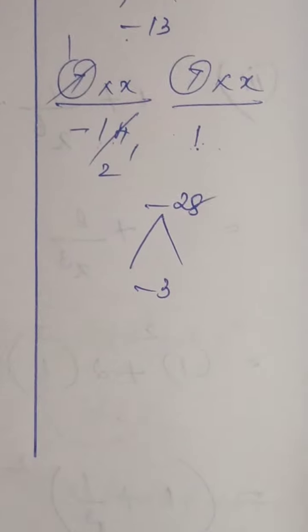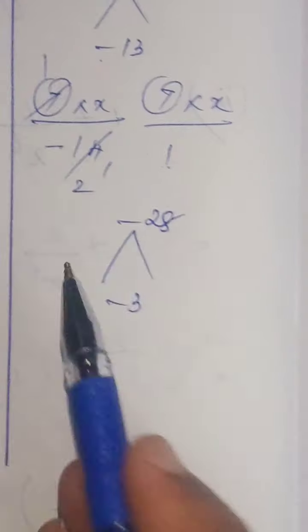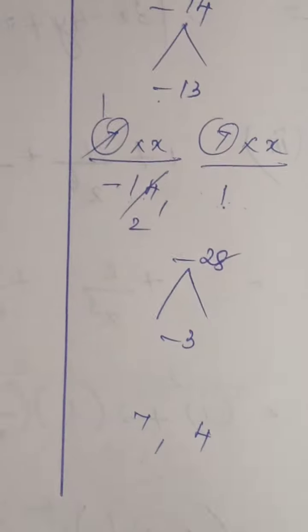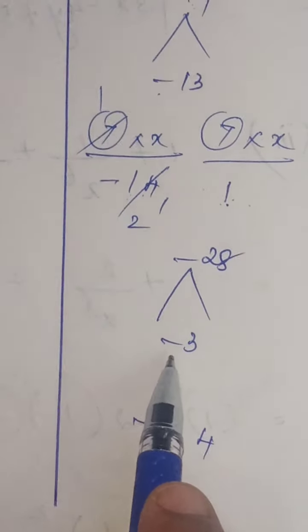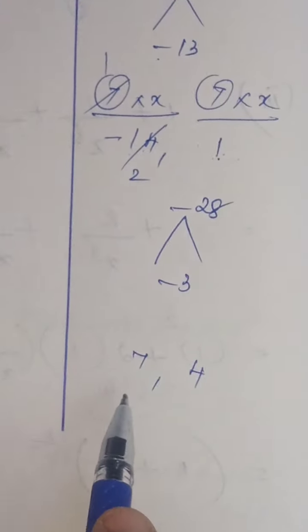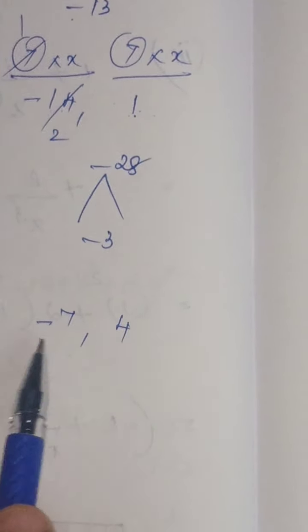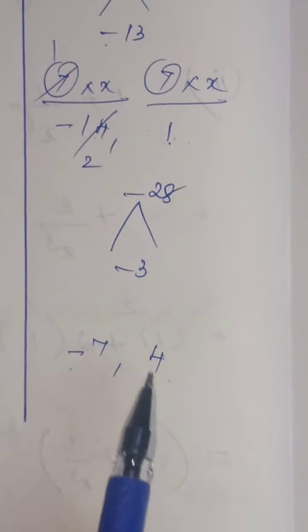14, 2s are 28, 7, 4s are 28. We have to consider 7 and 4 only. Then, only you can get 3. For getting minus 3, that minus has to be introduced for the bigger number.